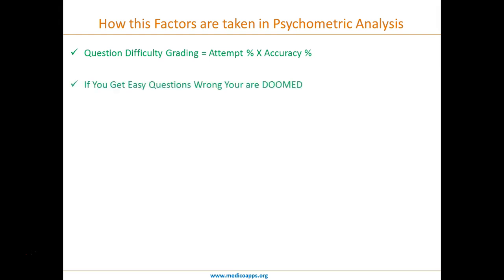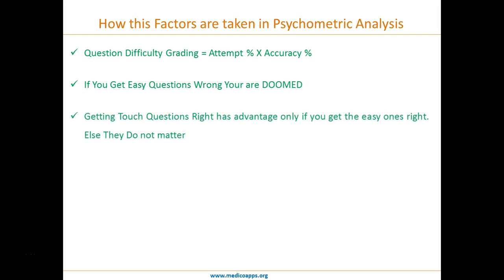Now the most important thing: if you get an easy question wrong, you are doomed. As we saw in the example, getting an easy question wrong means the credibility of getting a tough question right also goes away. The computer considers that you got the tough question correct merely by guesswork, nothing more. Getting a tough question right has an advantage only if you get the easy ones right — otherwise they don't matter.